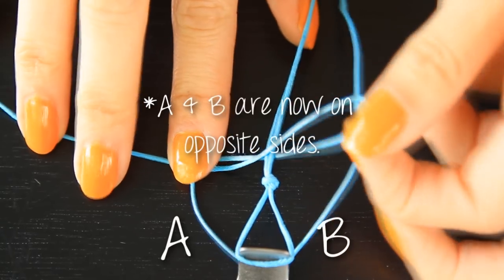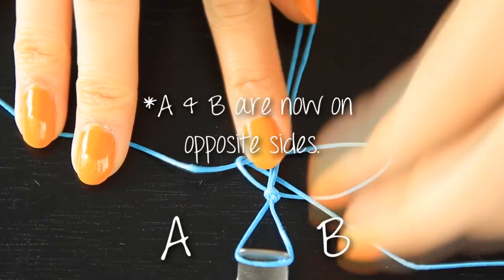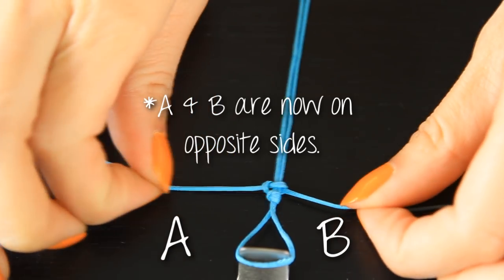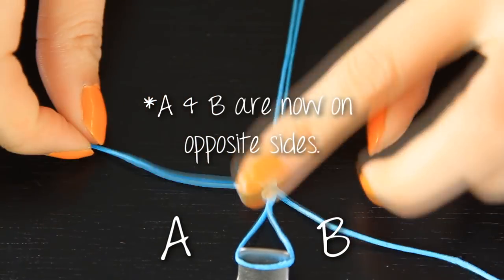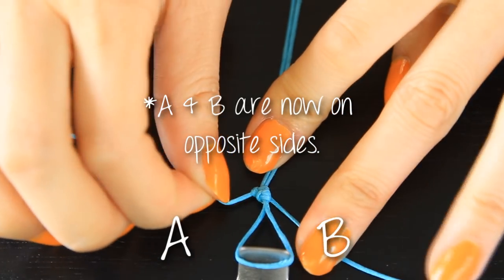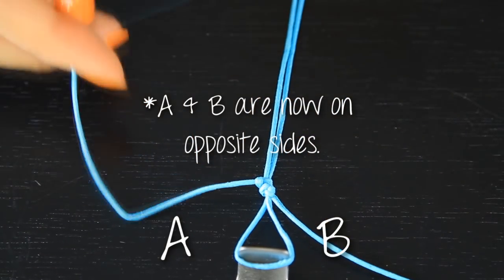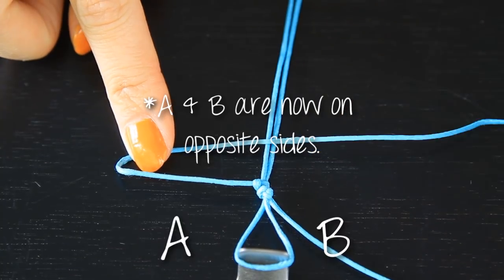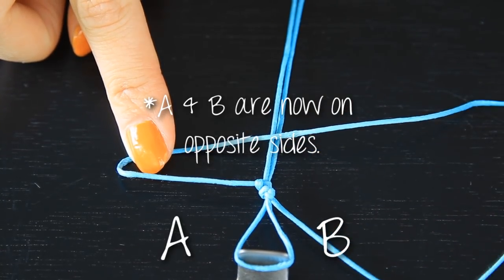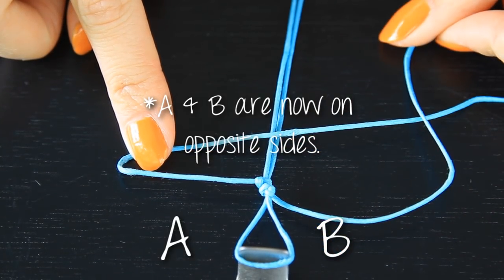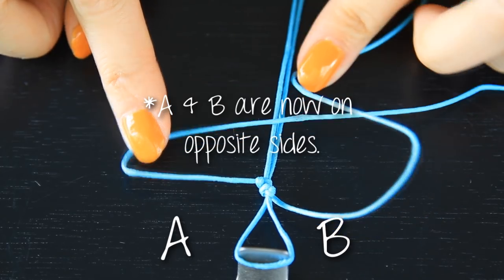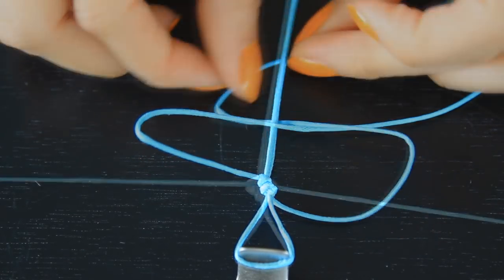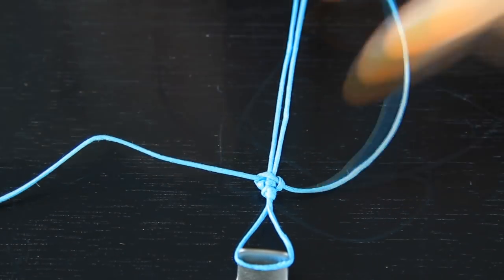Now keep doing the same thing. Put string A over on top of the double strings. And then string B will always go underneath the double strings. So remember that when you're doing this. See as I'm doing it right now? I fold string A over and then string B goes over string A but then under the double strings. Again, if you're confused, just go back and check my other tutorial. I explain it more in depth.